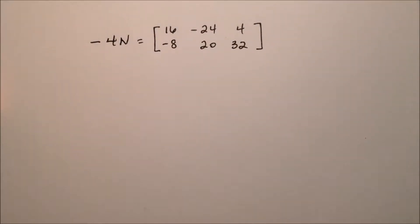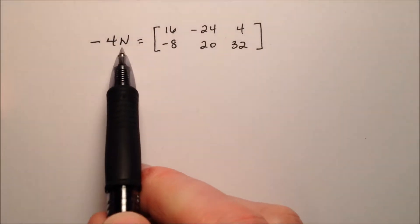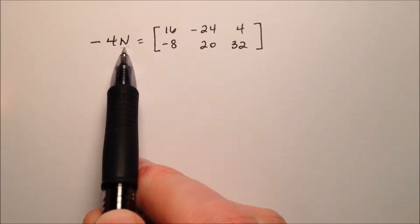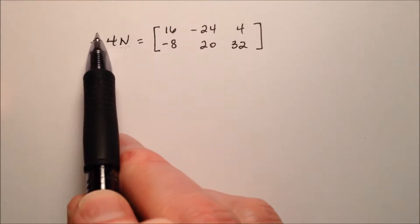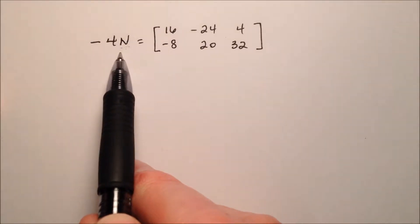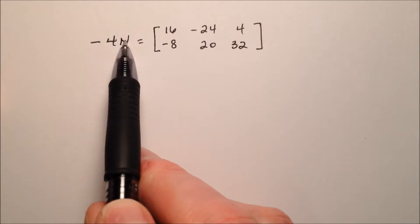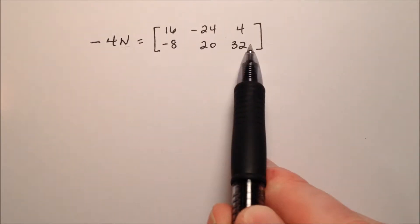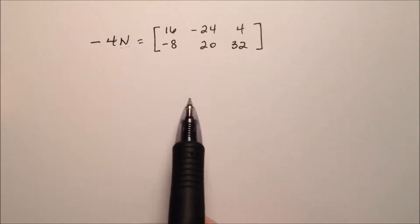Here we're going to solve the equation for the missing matrix. We have an understanding that N is going to be a matrix, and it looks like negative 4 has been multiplied by N, suggesting that we have scalar multiplication right here. And when we did this scalar multiplication, this is the matrix that we ended up with, this 2 by 3 matrix.